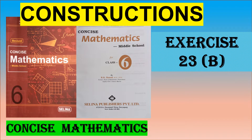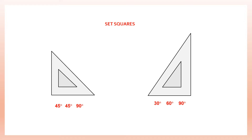Hello students, let's do constructions exercise 23b. In this exercise, we're going to make use of set squares. Set squares are generally of two types. We have one here which has angles of 45 degrees and 90 degrees — 90 degrees here, and 45 degrees on each of the other angles. If you need to get angles of 45 degrees or 90 degrees, we make use of this set square.